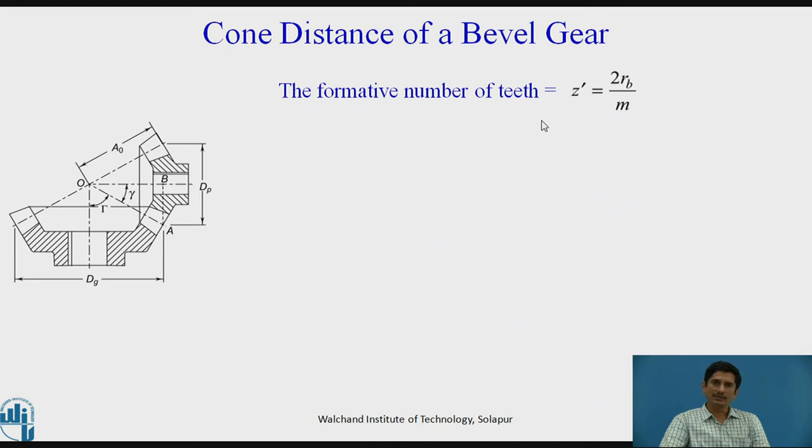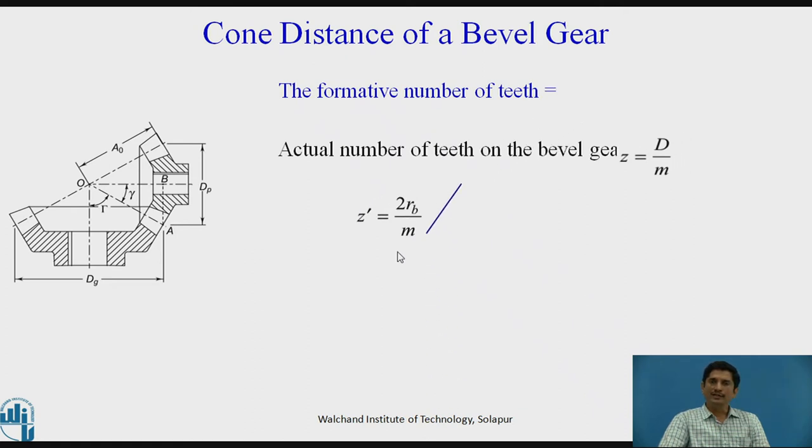The formative number of teeth for a bevel gear are given by Z dash equal to Rb upon M. The actual number of teeth on the bevel gear, Z equals D upon M. I need to divide these two equations in order to establish the relation between Z dash and Z. Z dash upon Z is hence equal to 2Rb upon D. We have established a relation of formative number of teeth, actual number of teeth, radius of formative spur gear multiplied by 2 represents the diameter of the formative spur gear, and capital D represents the diameter of actual bevel gear.